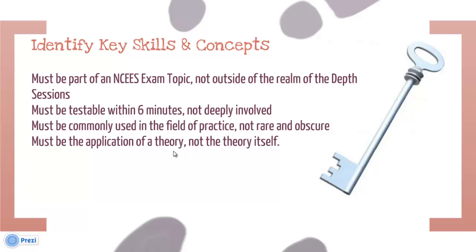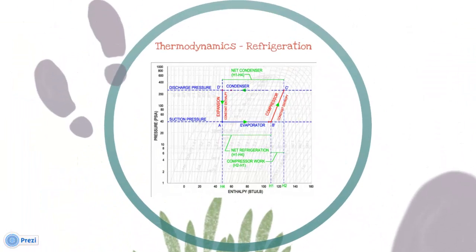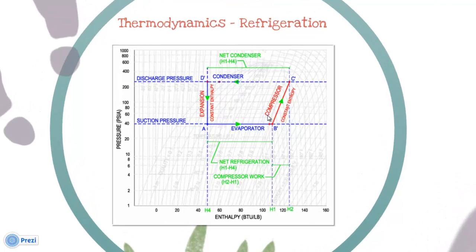In order to reinforce the study method of determining the key concepts and skills, I will go over a few recommended skills for the mechanical PE exam with a focus on HVAC and refrigeration. First, the thermodynamics and refrigeration topic. A skill that the professional engineer should have is the ability to navigate a refrigerant pressure-enthalpy diagram, with a focus on plotting the vapor compression cycle and determining items like the COP, the net refrigeration effect, the net condenser effect, and the compressor work.